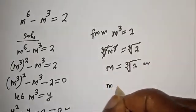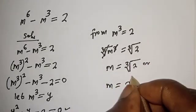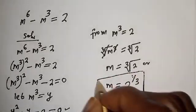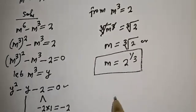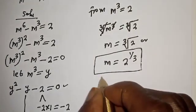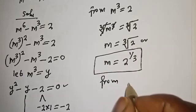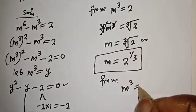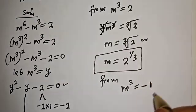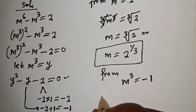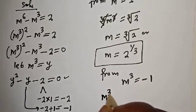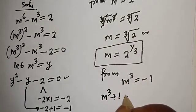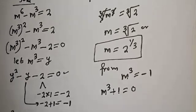From the second case, m raised to power 3 is equal to minus 1. We can express this further: m raised to power 3, if we bring minus 1 to this side, it becomes plus 1 is equal to 0. So m raised to power 3 plus 1 is equal to 0.